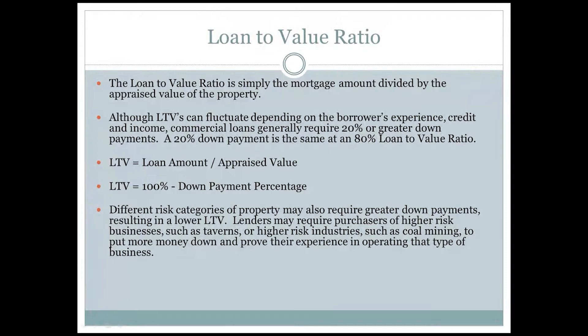Commercial lenders do review borrower qualifications including credit worthiness, income, and particularly experience in commercial real estate. There are several critical ratios a lender requires a property and borrower to meet in order to fund the loan. The loan to value ratio is simply the mortgage amount divided by the appraised value of the property — very similar to residential. Although LTVs can fluctuate depending on the borrower's experience, credit, and income, commercial loans generally require 20% or greater down payments. A 20% down payment equals an 80% loan to value ratio. The LTV equals 100% minus the down payment percentage. Different risk categories of property may also require greater down payments resulting in a lower LTV.